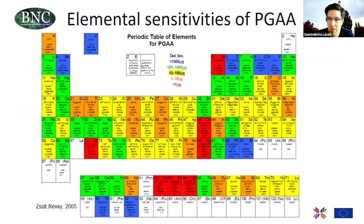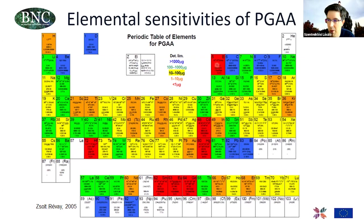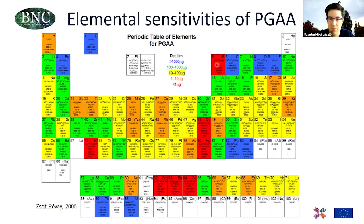The method has different analytical sensitivities for different elements and isotopes. Some elements like carbon, oxygen, or lead can be measured as major components in the percentage range, while other elements can be measured down to 10 or 100 micrograms, and a few trace elements can be quantified down to one microgram. These sensitivities are dictated by nuclear physics properties and determined by the neutron capture cross-section, which is known and tabulated for elemental composition determination.